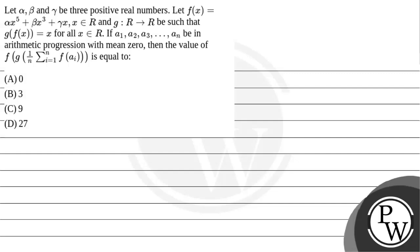Let alpha, beta, and gamma be three positive real numbers. Let f(x) = αx⁵ + βx³ + γx where x belongs to ℝ. Let g: ℝ → ℝ be such that g(f(x)) = x for all x in ℝ. If a₁, a₂, a₃, ..., aₙ be an arithmetic progression with mean zero, then find the value of f(g(1/n · Σᵢ₌₁ⁿ f(aᵢ))).